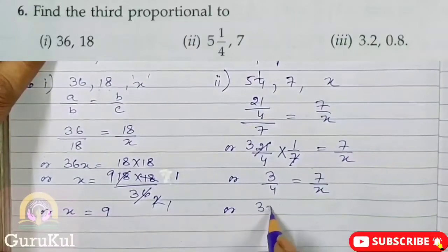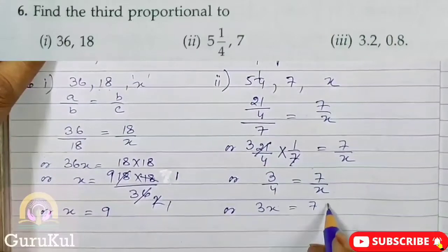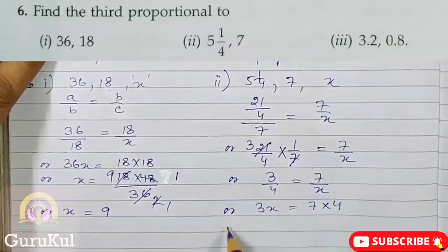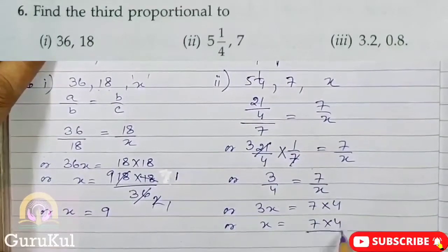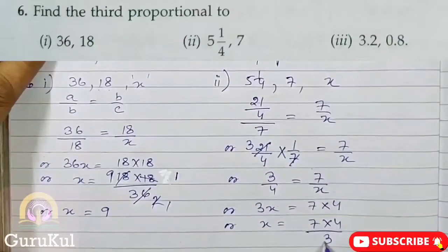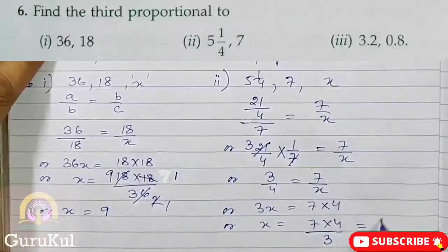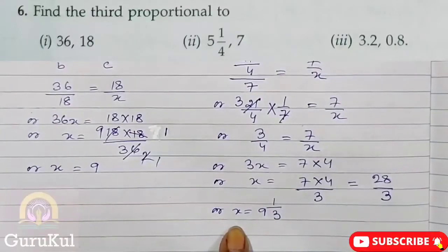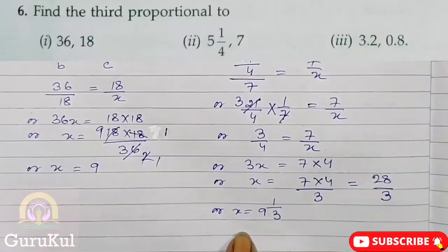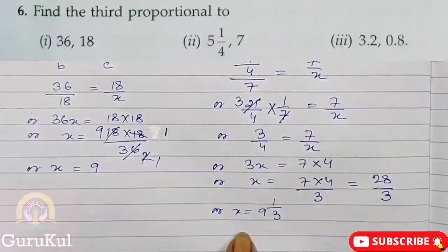Or, 3X is equal to 7 into 4. Or, X is equal to 7 into 4 by 3, which is 28 by 3. The value of X is 9 and 1/3. So 9 and 1/3 is the third proportion.